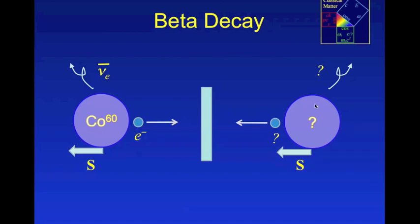So what we see in the mirror is a process where a particle is emitted from a nucleus in the same direction as the spin. Now, physicists have long believed that the mirror image of matter is also matter.